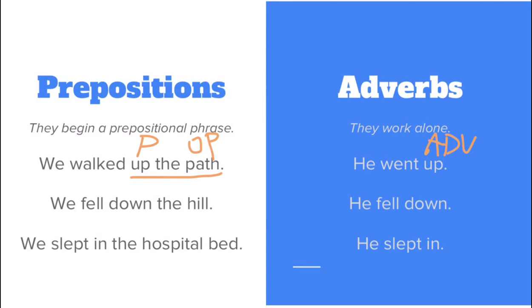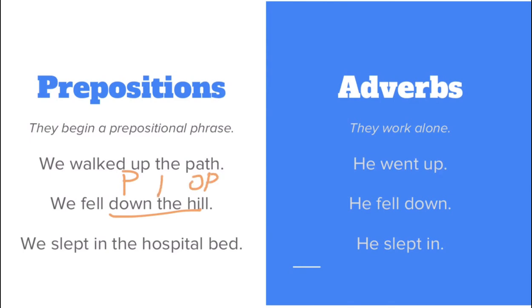Let's look at another example on the preposition side. We fell down the hill. 'Down', in this case, is our preposition, and 'down the hill' is a prepositional phrase. We've got our object of the preposition, our article 'the', and it's telling us where we fell.